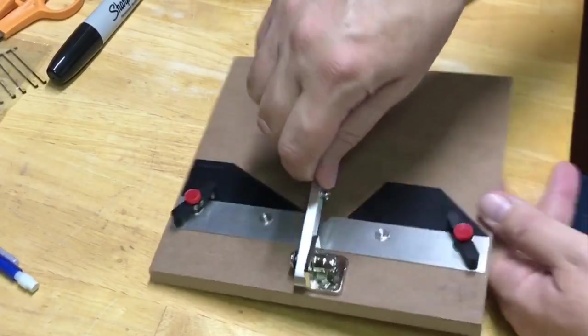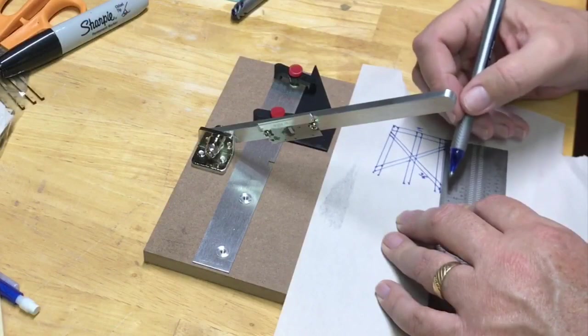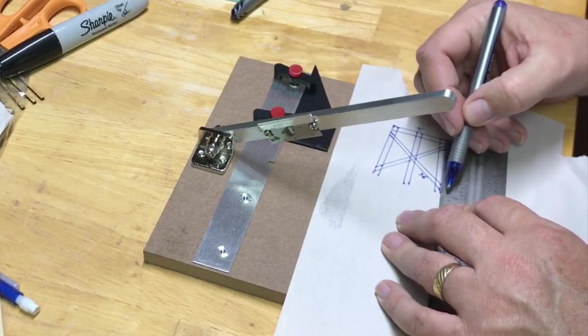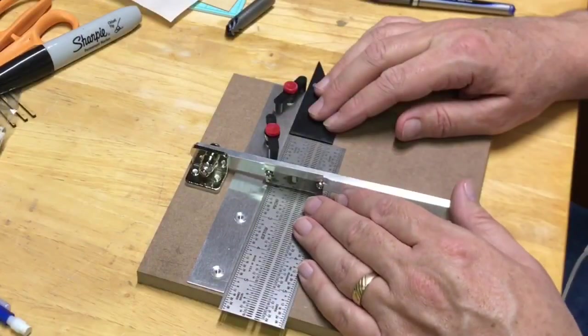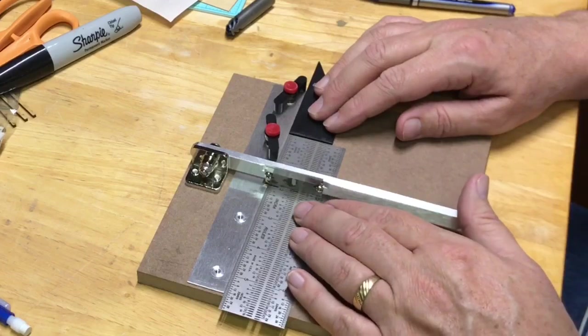Although not necessary, it's very convenient to have a tool like a micro mark chopper to ensure that all of your pieces are the same length, plus it saves a lot of time.